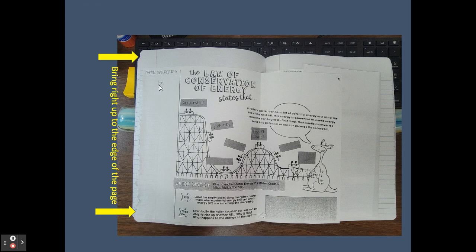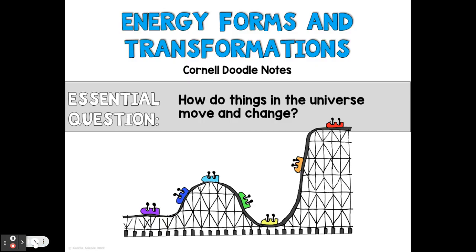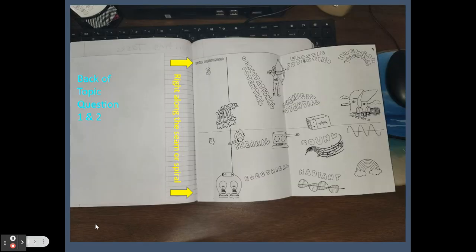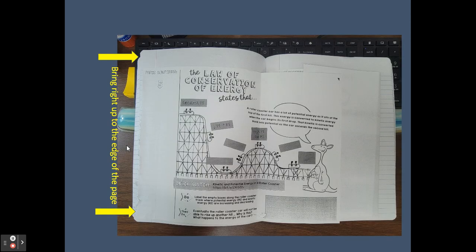Now, topic question five—you flipped your page over. Right, this page that page three and four is on, you flip it over to the next page. And you're going to put it on the back side of three and four, and that also goes right up along the edge of the page.